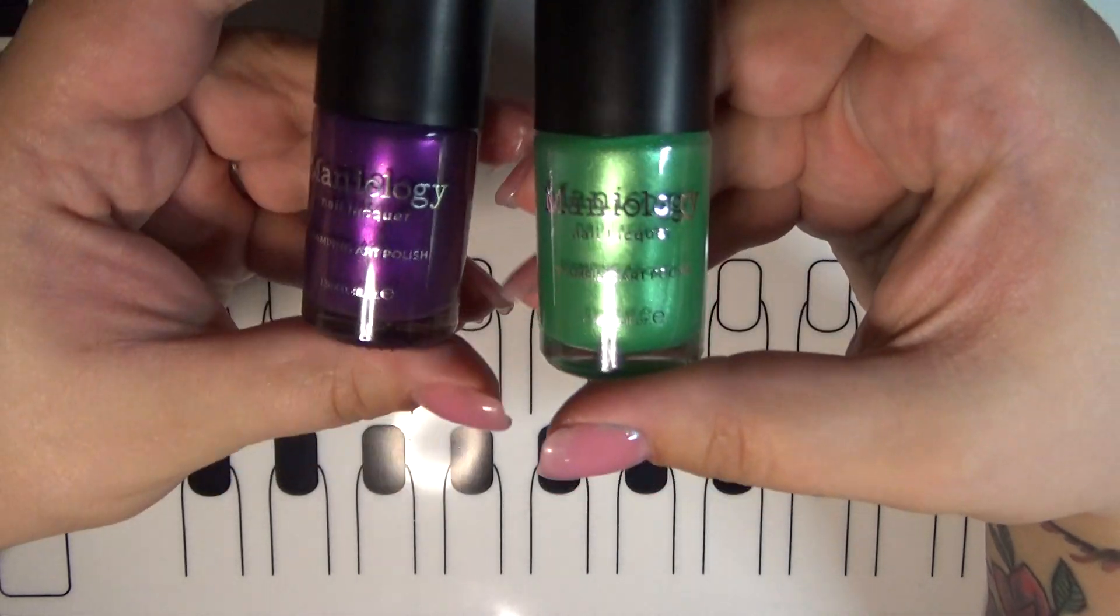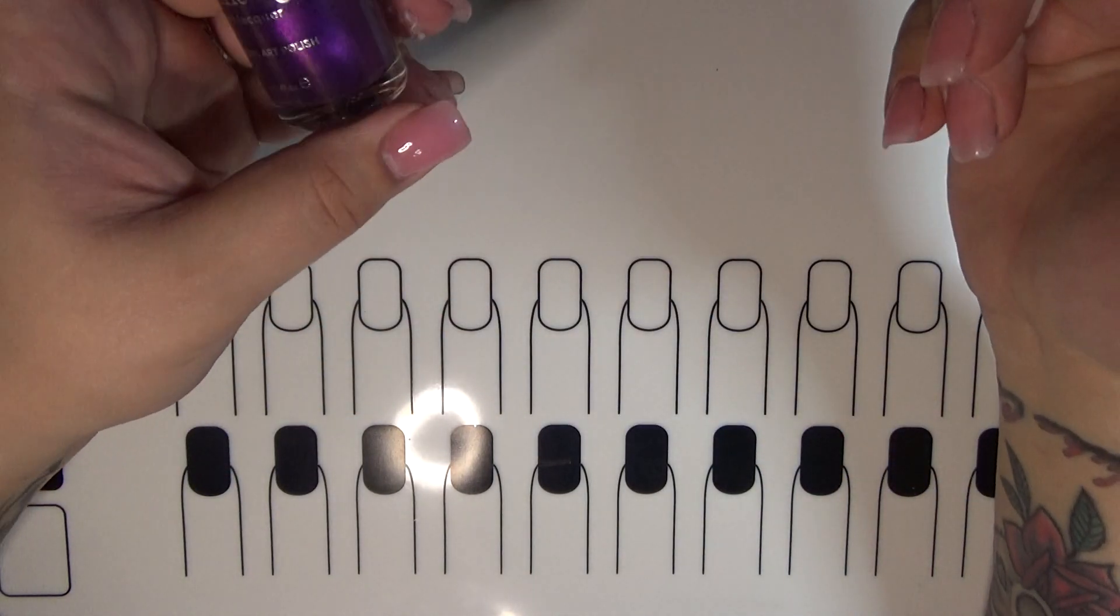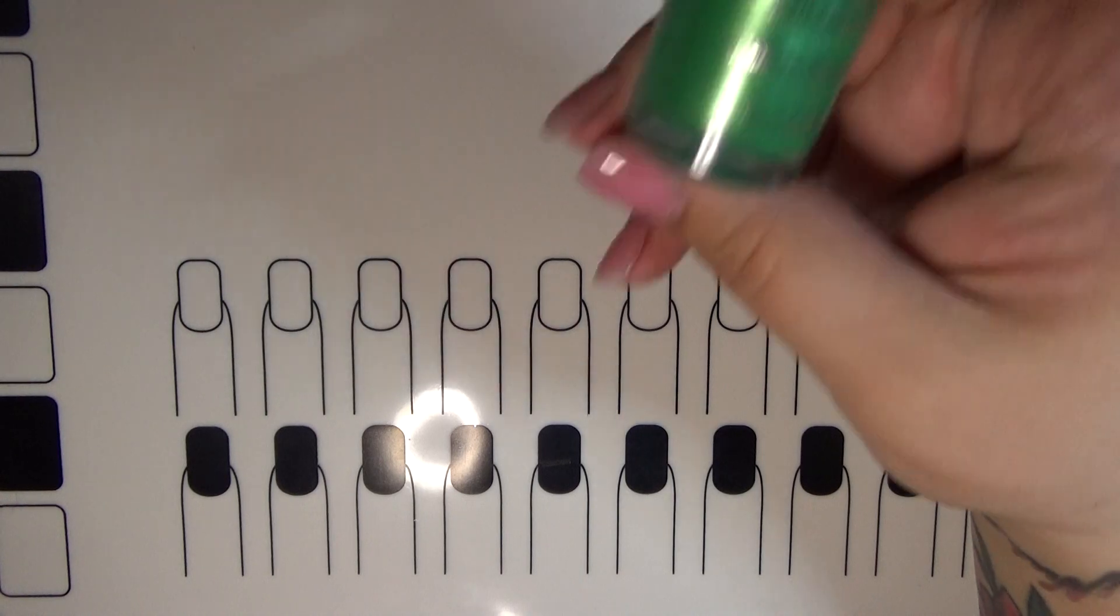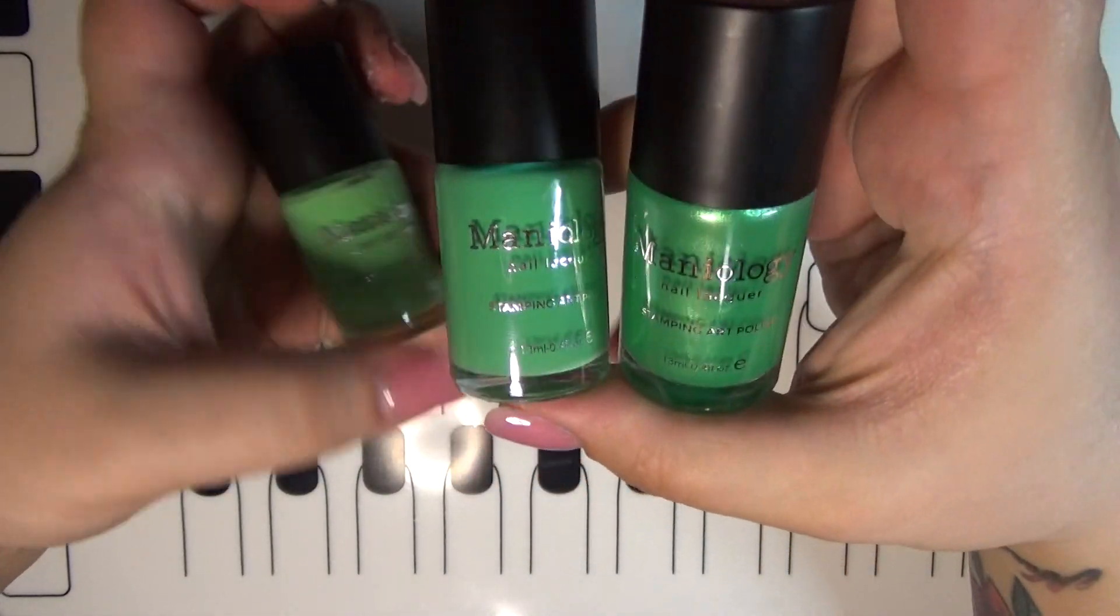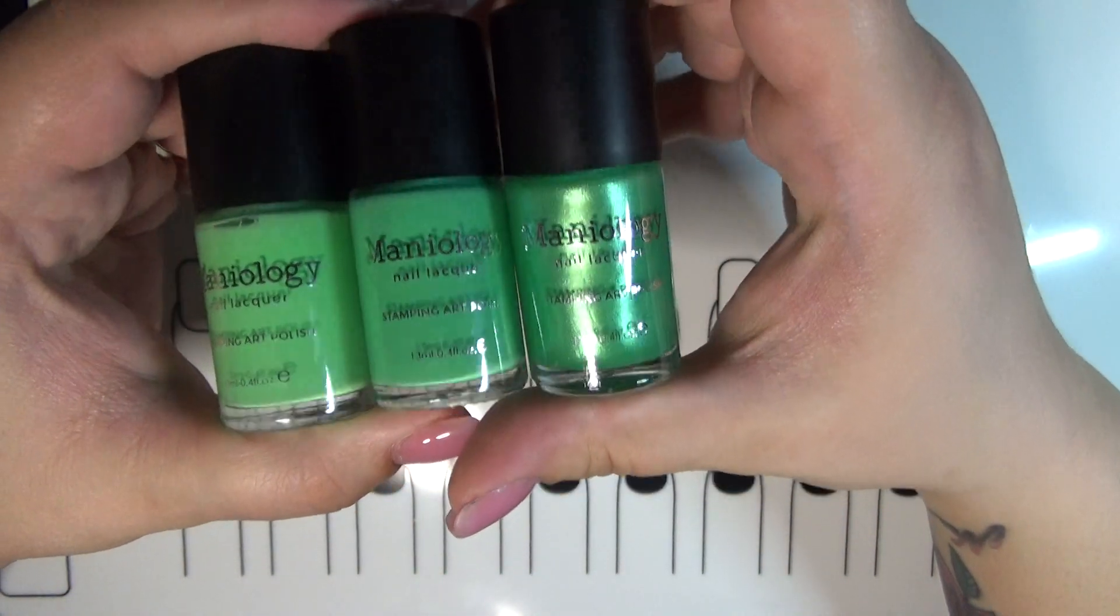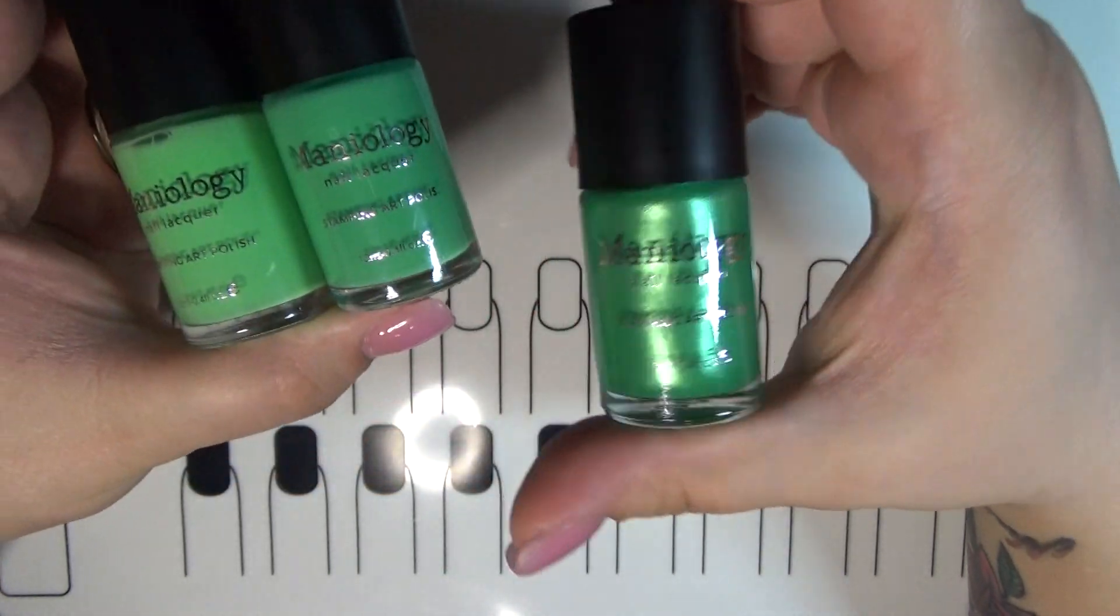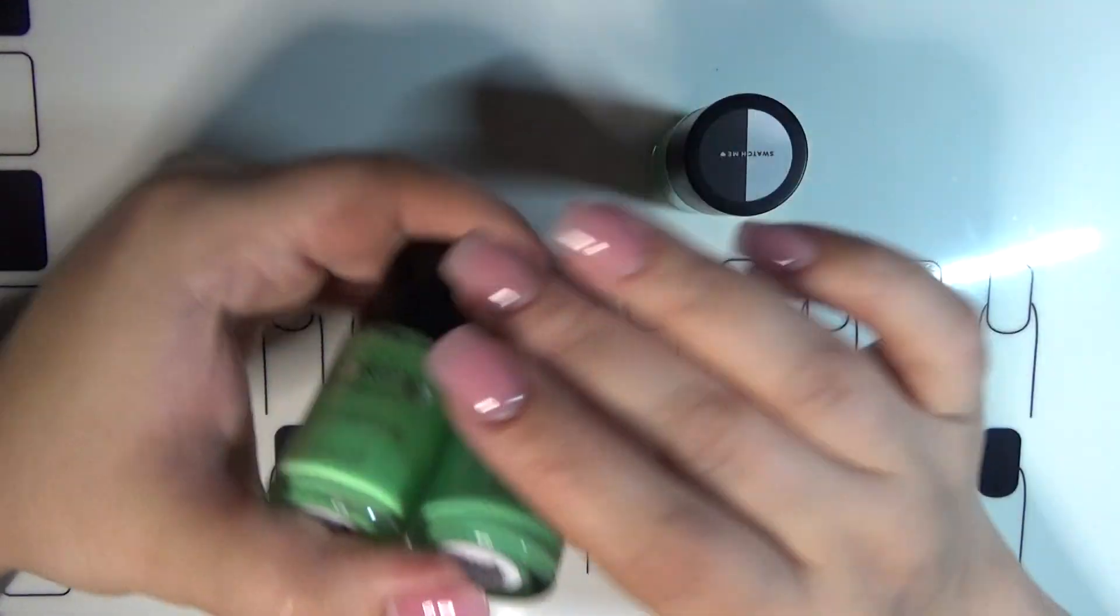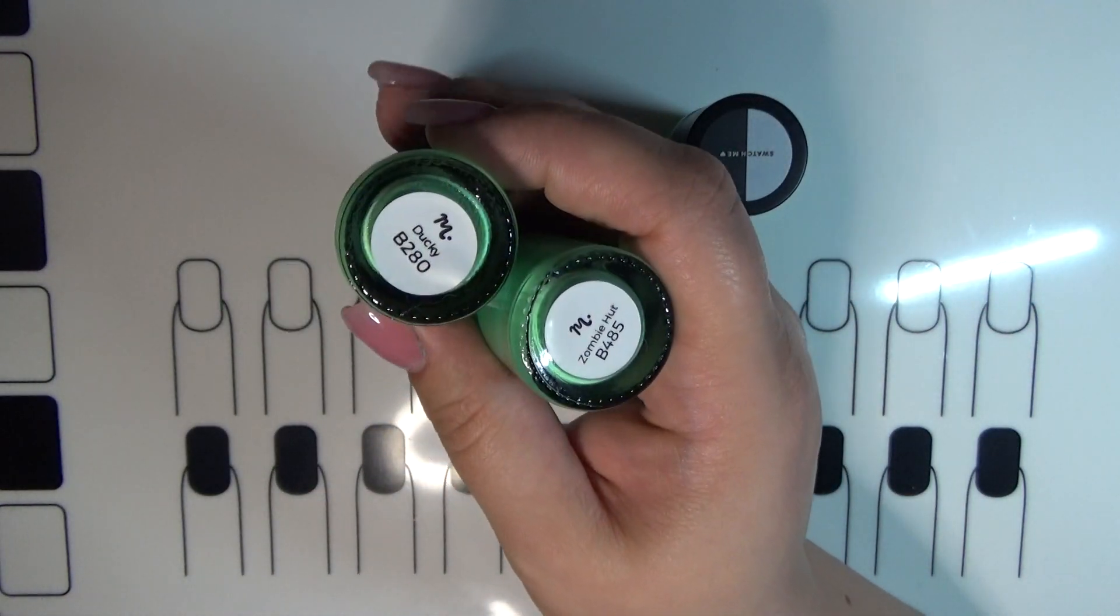These are beautiful purple and green colors, and I got the closest ones to it that I already own. I have some honorable mentions for Willow - these are non-metallic, non-shimmery greens very close to Willow in color, but they're creams not metallics. The honorable mentions are Zombie Hut B485 and Ducky B280.